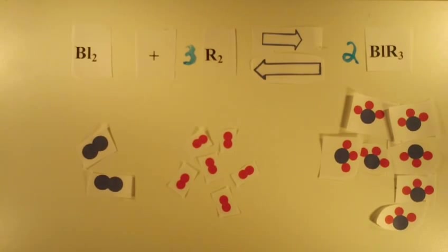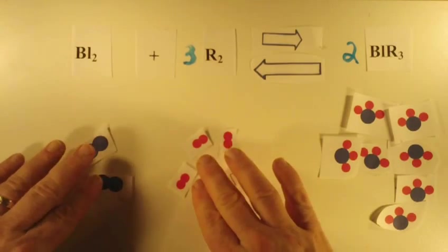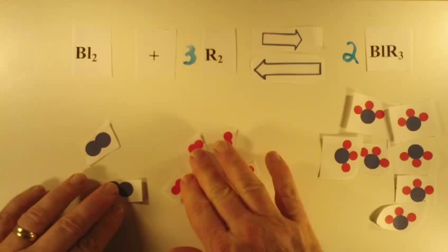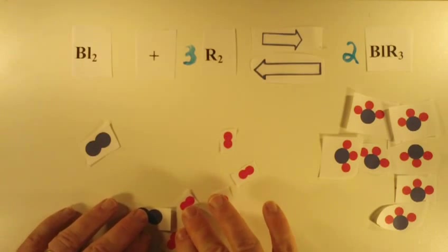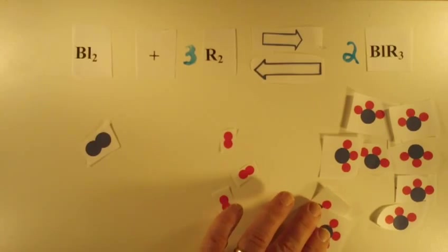Now while the reverse reaction is occurring, the forward reaction can also start happening. One set of blue molecules must come together with three red molecules. Again, we are not interested in the mechanism, which is probably multi-step. We are just interested in the overall reaction that forms right side molecules.